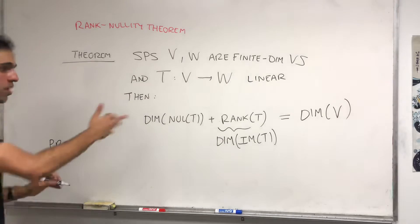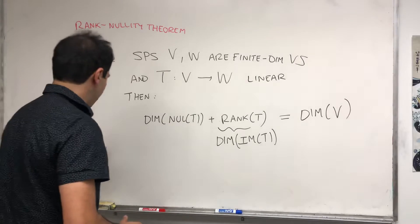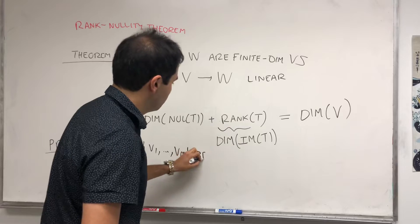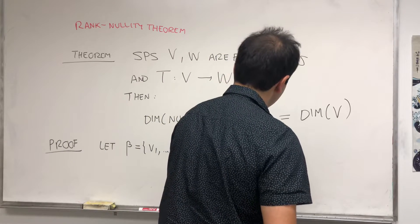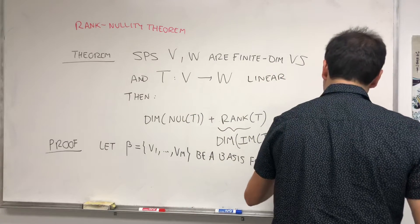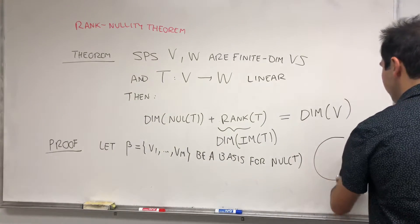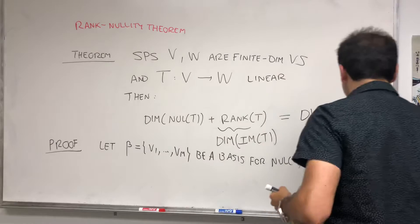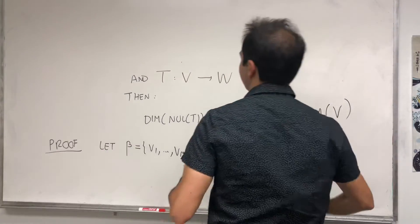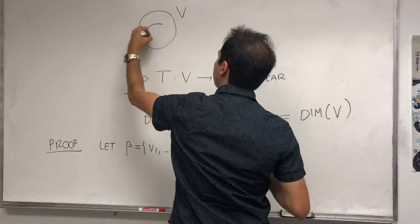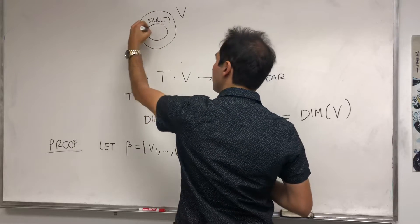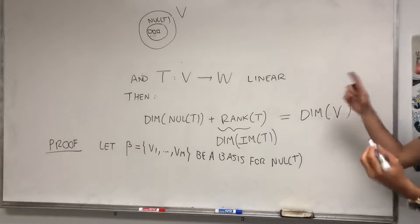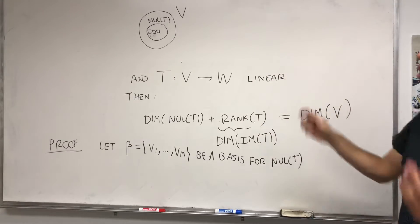Proof: Let V1 up to Vm be a basis for null of T. So let me give you a little picture. So this is V, and this is null of T. And suppose V1 up to Vm, those are your VIs. And what we want to do, let's extend it, so it's a small space. Let's extend it to be a whole basis of V.